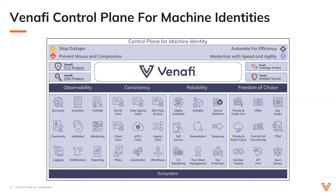This control plane allows all entities that rely upon, create, and modify objects to use a standard approach for control. It is connected to all machines and provides the control required for desired outcomes. The control plane for machine identity management provides observability, consistency, reliability, and freedom of choice while simultaneously reducing complexity. It works across clouds, hybrid environments, data centers, and to the edge. It is connected to an extensive and vibrant technology ecosystem — the connected fabric to all machines — and is distributed by design.